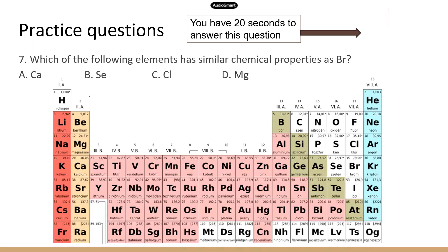Which of the following elements has similar chemical properties as bromine? Find bromine on the periodic table. If you recall, the elements in the same column have similar chemical properties, so you just need to look for whichever option is in the same column as bromine.